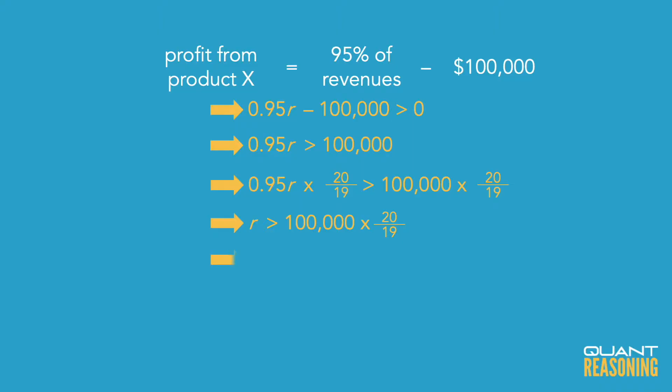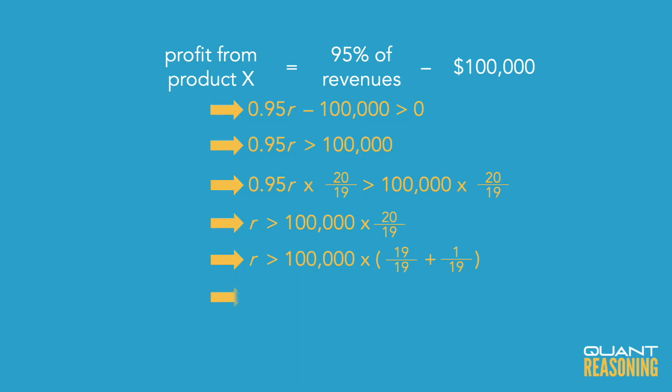I shouldn't have to compute such an awful expression on the GMAT — I should be able to just approximate. 20 over 19 is like 19 over 19 plus another 1 over 19. And 1 over 19 of $100,000 is going to be just slightly more than 1 over 20 of $100,000, which would be $5,000.